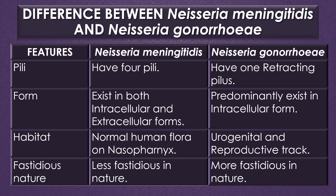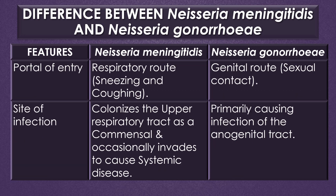Regarding fastidious nature, Neisseria meningitidis is less fastidious and Neisseria gonorrhoeae is more fastidious. The portal of entry of Neisseria meningitidis is the respiratory route; the disease spreads through sneezing and coughing. The portal of entry of Neisseria gonorrhoeae is the genital route through sexual contact. Meningitidis colonizes the upper respiratory tract and occasionally invades to cause systemic disease, while gonorrhoeae primarily causes infection of the anogenital tract.